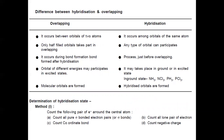Difference between hybridization and overlapping: Overlapping occurs between orbitals of two different atoms, while hybridization occurs among orbitals of the same atom. Only half-filled orbitals participate in overlapping, while any type of orbital can participate in hybridization. Overlapping occurs during bond formation; hybridization takes place just before overlapping. Orbitals of different energies may participate in overlapping (excited state), while hybridization can occur in ground or excited state. Molecular orbitals are formed by overlapping; hybrid orbitals are formed by hybridization.